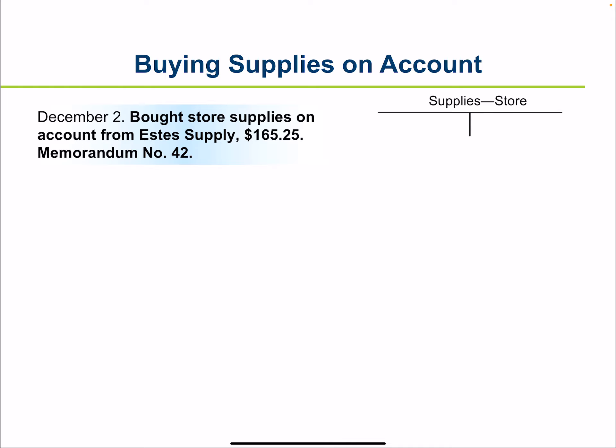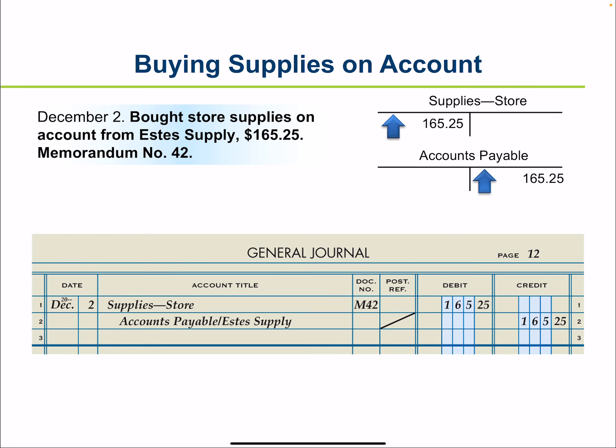When store supplies are bought on account, both the value of store supplies on hand and the amount owed to the vendor are increased. Because we did not pay cash, did not receive cash, did not buy merchandise on account, and didn't sell anything, this transaction goes in our general journal.